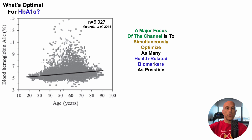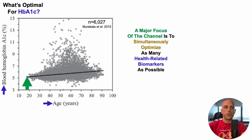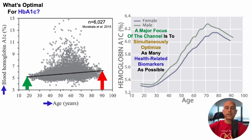In the first study, which included more than 6,000 people, we've got blood hemoglobin A1c levels and percentage on the y-axis plotted against age on the x-axis within the 20 to 90-year age range. In youth, around 20 years old, average HbA1c values are around 5%, whereas in 90-year-olds they're significantly higher at about 6%.